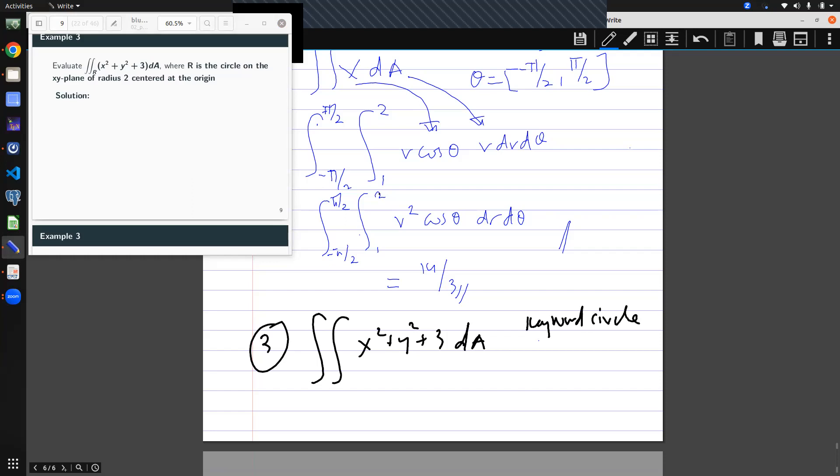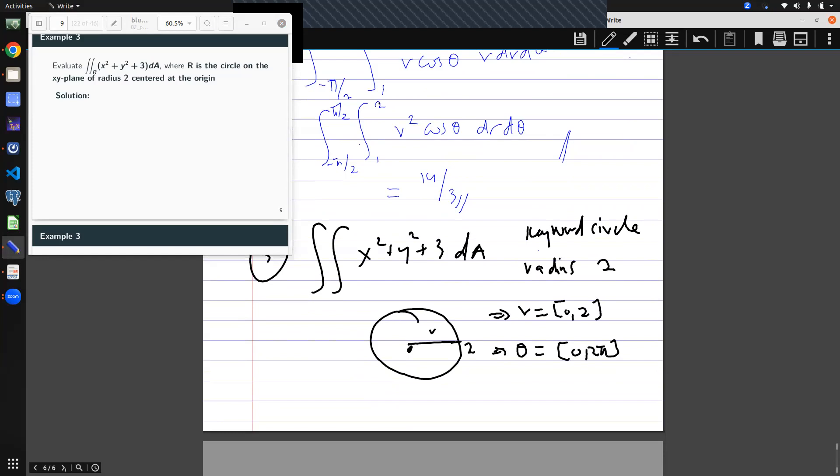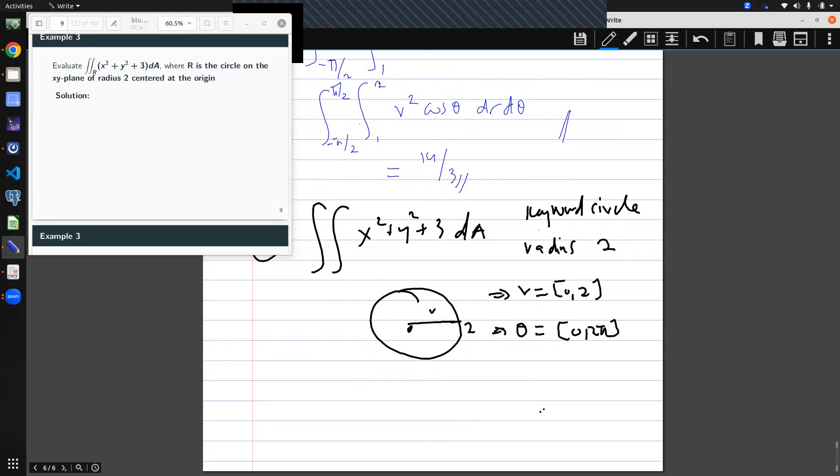It has a radius of 2 centered at the origin. So it's something like this. 2, which is r, 0, centered at the origin. From this, what can you say? You can simply say that your r is between 0 and what? 2. And then your theta, because it's a full circle, your theta is 0 to 2 pi. A similar set. And so my original problem becomes 0 to 2 pi, 0 to 2.